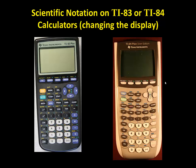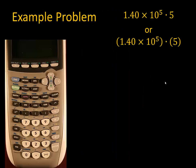We'll do a few sample problems to learn about the display. For our first sample problem, we want to multiply 1.40 times 10 to the 5th times 5. You can think of this wrapped in parentheses if you like, but we won't need to enter any parentheses.